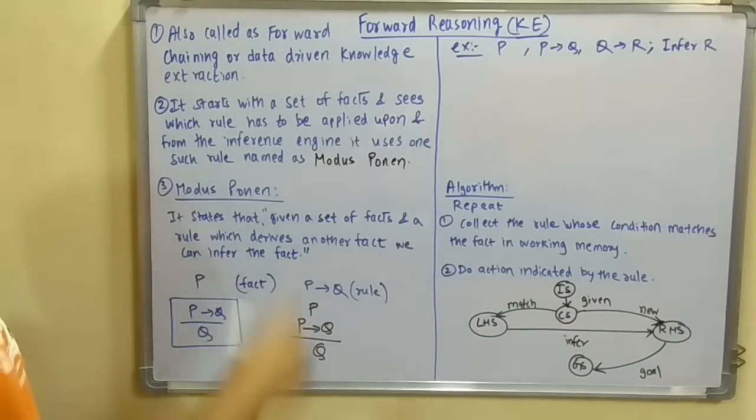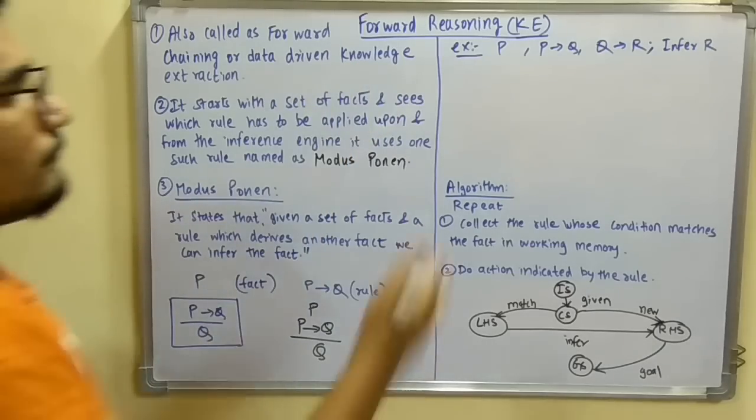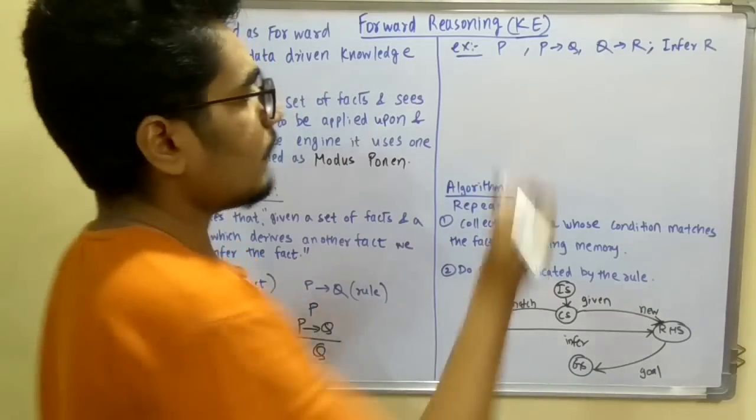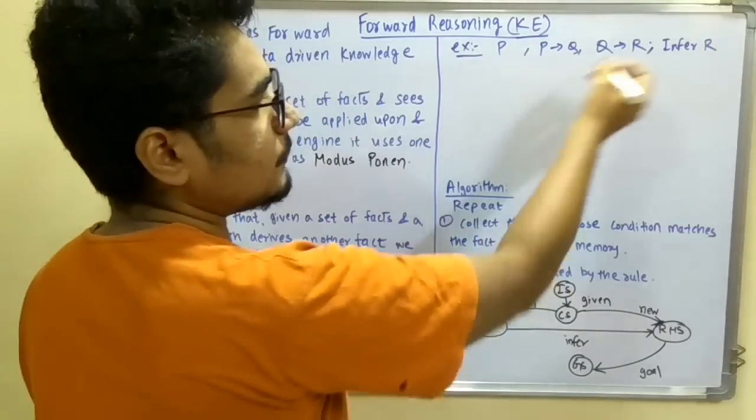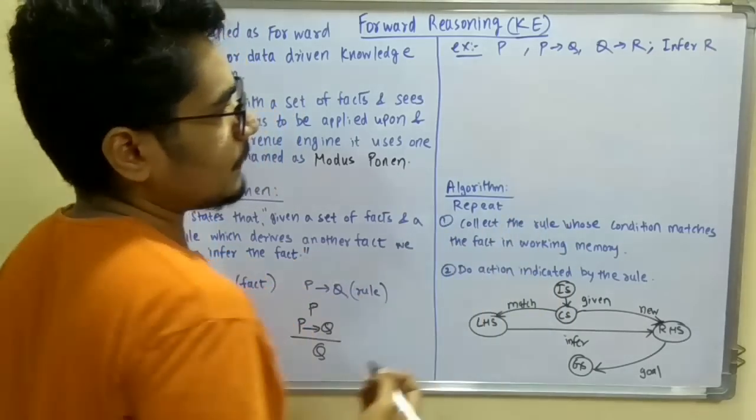Now we will consider this with an example. We have fact P and rules: P derives Q and Q derives R, and you can infer R.